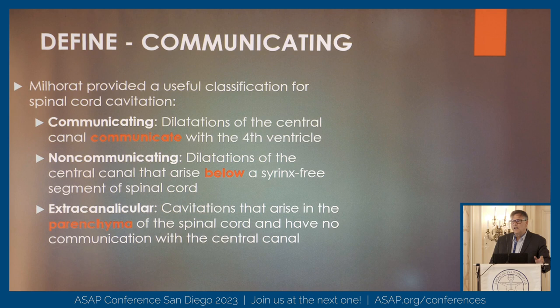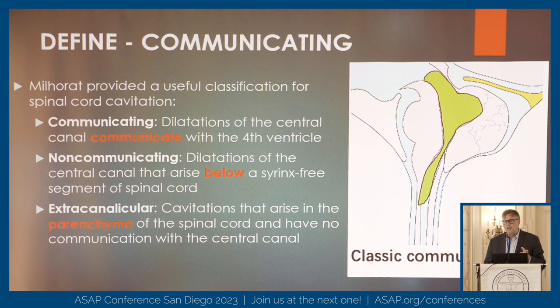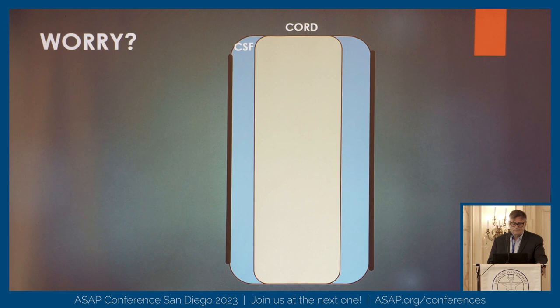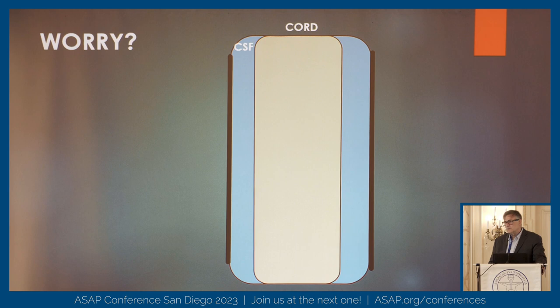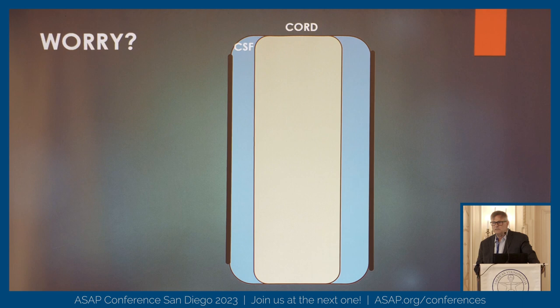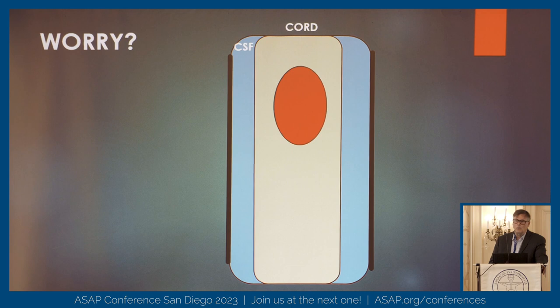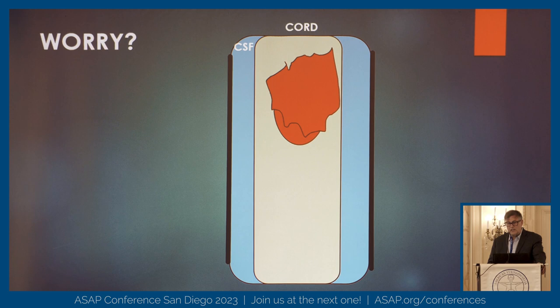Briefly, communicating versus non-communicating: communicating means the syrinx communicates with the normal CSF pathways through the ventricular system of the brain through the fourth ventricle and into the syrinx. If there's no communication, that's non-communicating. We worry about this based upon surgical considerations. Everything we do is based upon the chance of benefiting somebody versus the risk of hurting somebody, having the benefit sufficiently outweigh the risk to make it worthwhile.